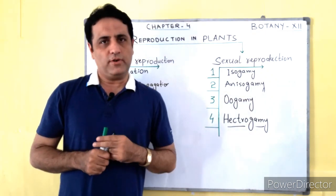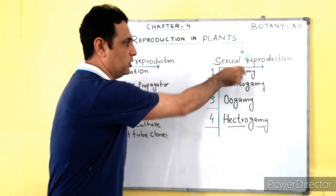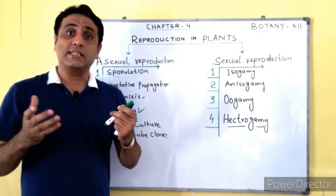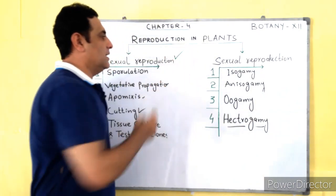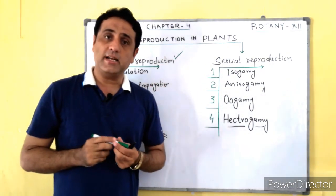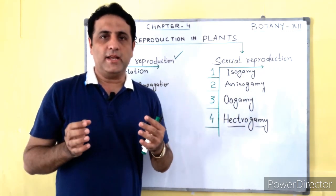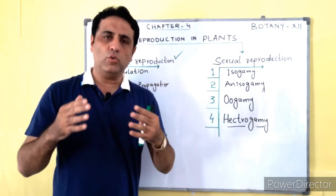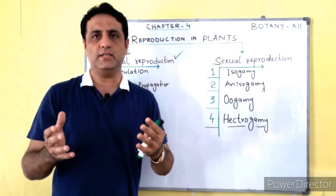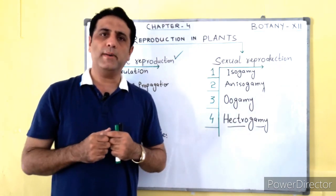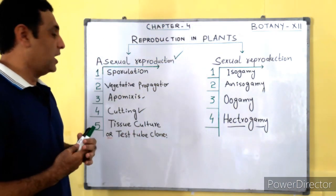In plants there are two types of reproduction: number one, asexual reproduction; number two, sexual reproduction. Asexual reproduction is that kind of reproduction in which male and female gametes do not fuse — meaning without the fertilization of male and female gametes, an organism is produced. This is very common in plants.